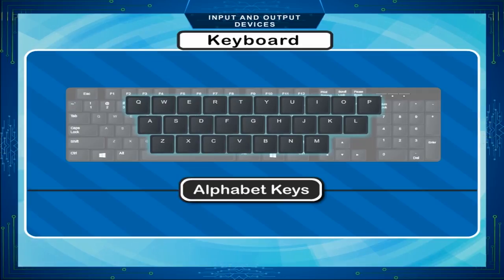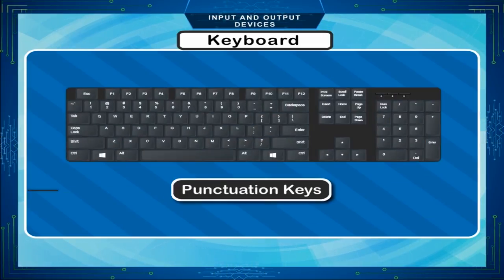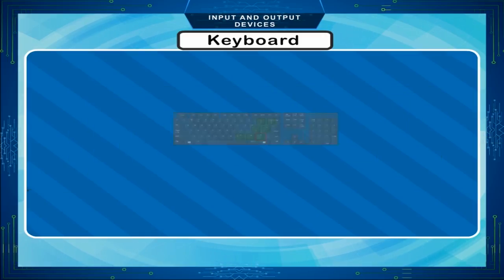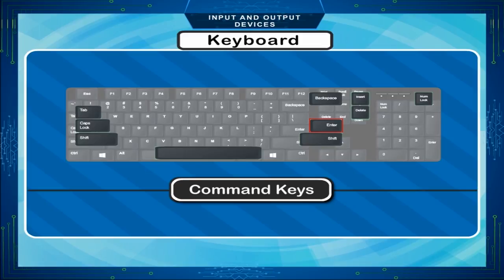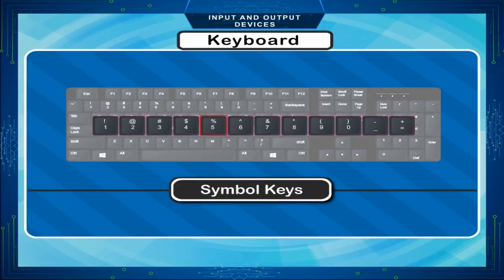Alphabet keys. Number keys 0 to 9. Punctuation keys: comma, full stop, quote, unquote, smaller than, greater than, slash, etc. Command keys: Enter, Shift, Caps Lock, Tab, Num Lock, Spacebar, Backspace, Delete, Insert, etc. Symbol keys: plus, minus, asterisk, percentage, slash, at the rate, hash, dollar, etc.